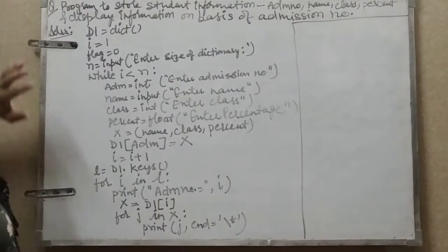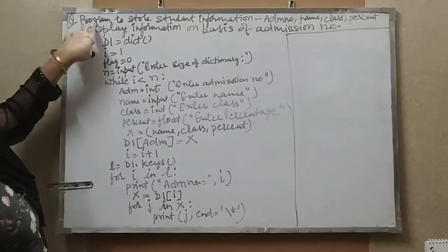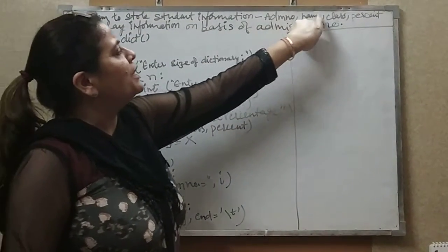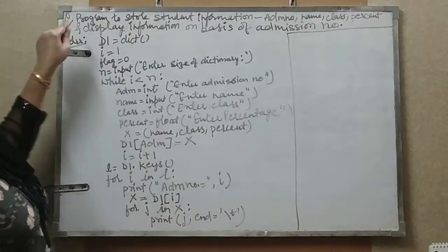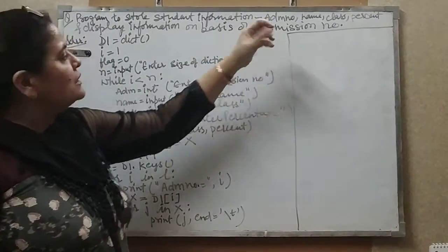On the basis of what we have learned in dictionary, we have one program to store student information which contains admission number, name, class, and percentage, and display the information on the basis of admission number.